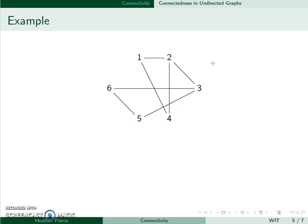For example, here's a graph, and this is connected. For instance, I can go from 1 to 2, I could go from 1 to 3, 1 to 4, I could get from 1 to 5, and 1 to 6.